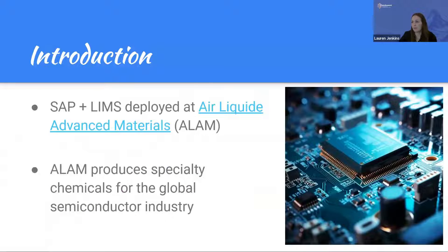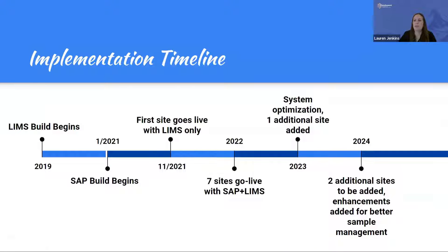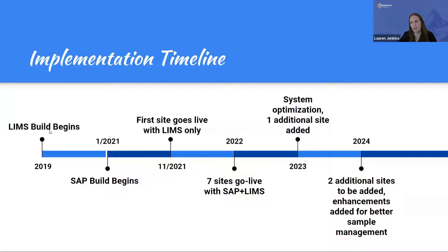Air Liquide Advanced Materials produces specialty chemicals for the global semiconductor industry. When I started in 2020, LIMS was beginning to be built across five U.S. locations and three APAC locations, where each site had its own LIMS build but the same LabWare LIMS platform for everyone. As you can see from this timeline, we did both LIMS and SAP staggering back and forth at the same time.